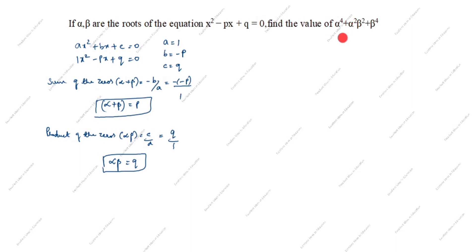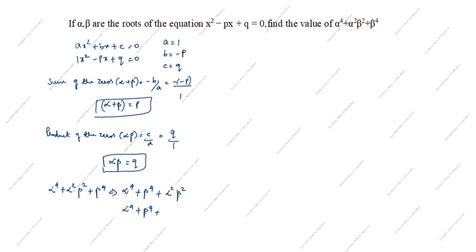In this question, what we need to find is alpha⁴ + alpha²·beta² + beta⁴. We can rewrite this as alpha⁴ + beta⁴ plus (alpha·beta)². We already know the alpha·beta value. Now we need to find alpha⁴ + beta⁴.